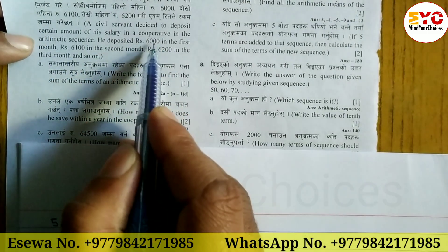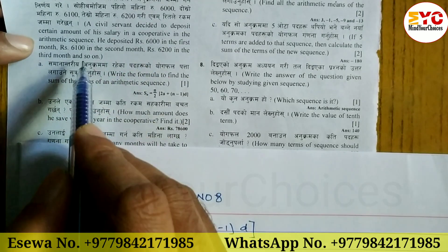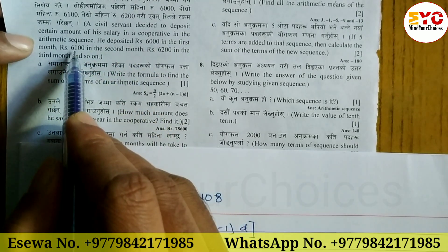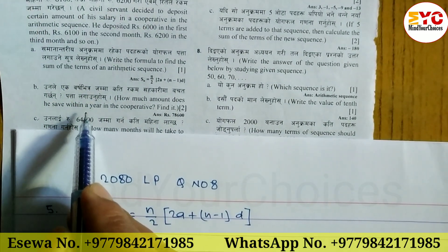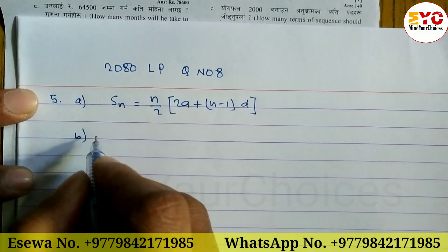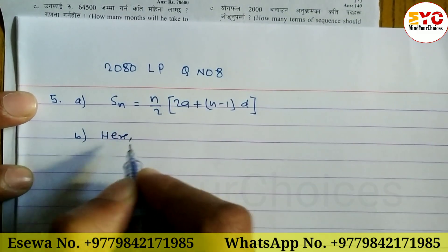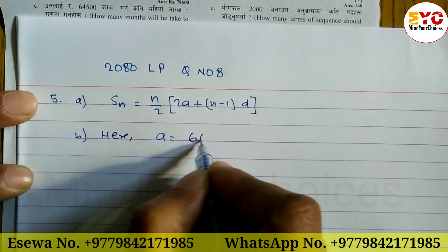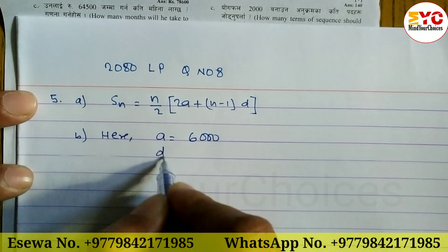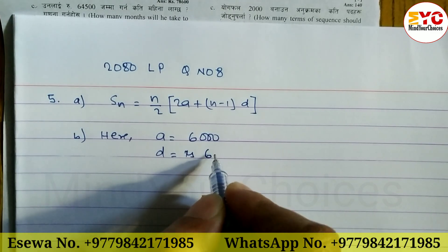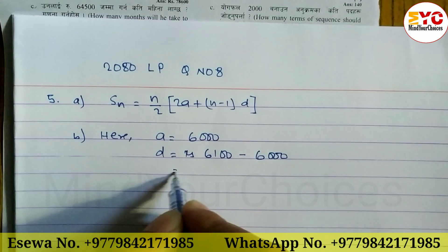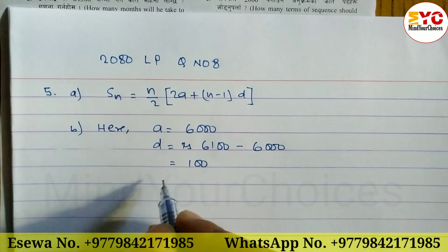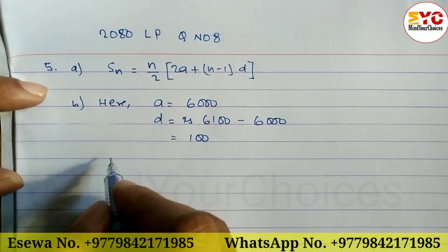The first month deposit is Rs. 6,000, so the first term a is equal to 6,000. The common difference d is the second term minus the first term: 6,100 minus 6,000, which gives us 100. So common difference d is equal to 100.